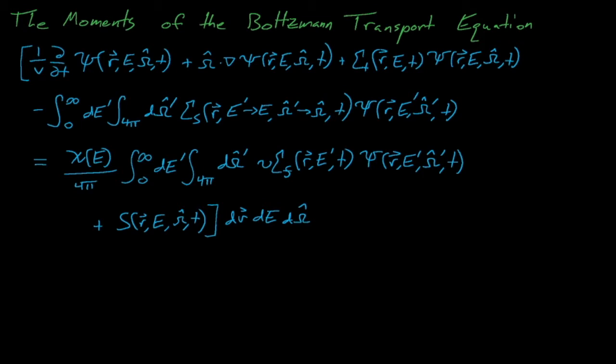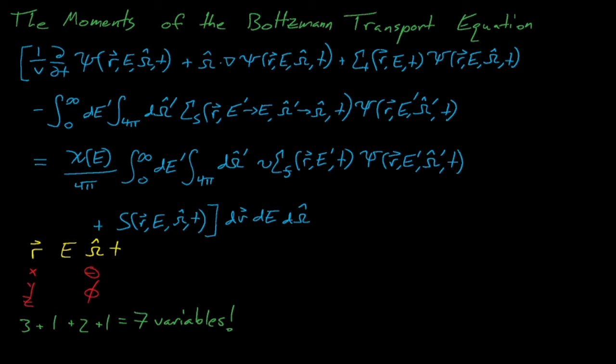We can manipulate these equations into various forms and solve the Boltzmann transport equation with various levels of fidelity. Before we jump into things, it's worth briefly discussing the field of radiation transport. Solving the Boltzmann transport equation is a difficult endeavor. The equation has seven independent variables: three for position r, two for direction omega, one for energy, and one for time. In general, this equation has no analytical solution for real-world applications, so instead we must solve it with varying levels of approximation. This approximation generally involves discretizing the equation into different intervals as a function of space, energy, direction, and time.